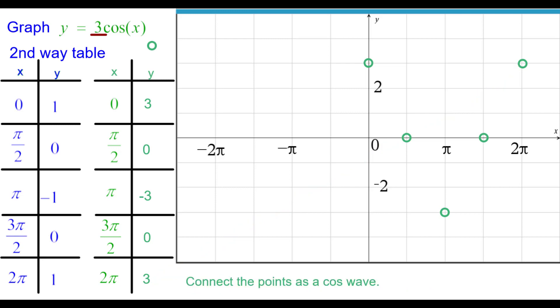Connect those points as a cosine wave. Concave down. Concave up. Concave down. This is one period of the wave. Let's plot another one to the left. We'll start at this point here and go back the period, which is 2 pi. So at negative 2 pi, 3. Back a period. Back a period. And back a period.